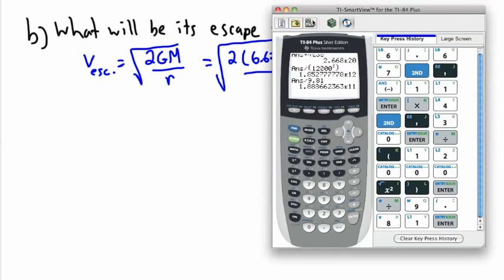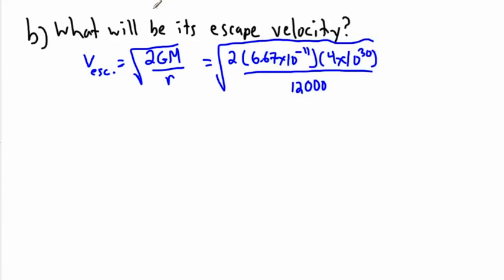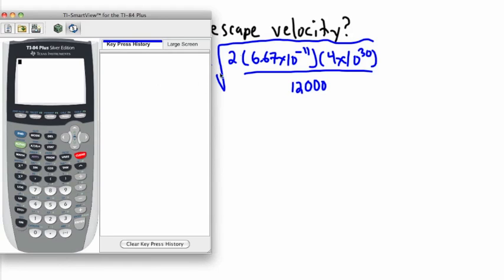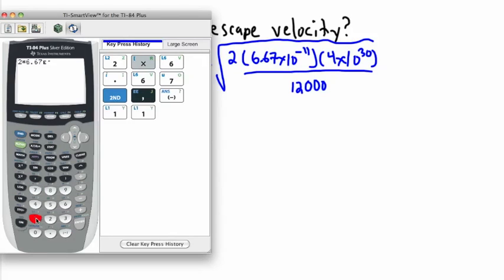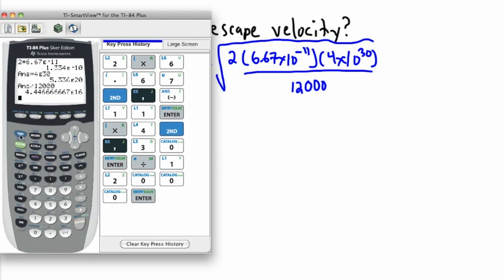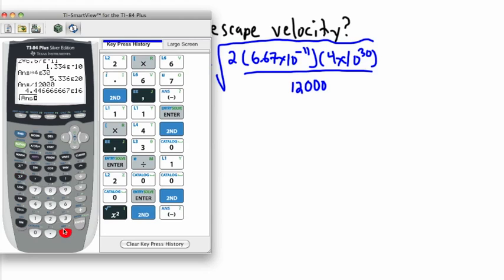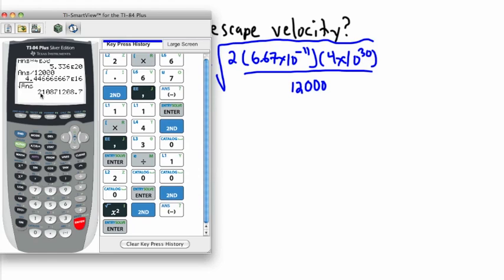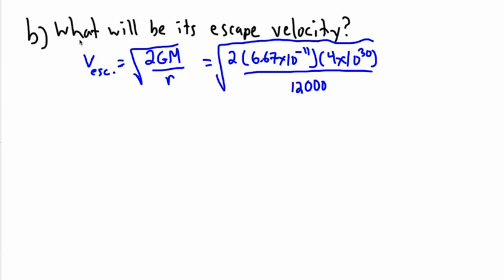So again, we need our calculator. I'm going to do 2 times 6.67×10^-11, times 4×10^30, divide it by 12,000, that was the radius of the neutron star. Then I get the square root of the answer. And then I get this number, 2.1 times 10 to the 8. So v_escape = 2.1×10^8 meters per second. That's the escape velocity. In other words, if you wanted to get in your spaceship and completely leave this object, you'd have to go this fast to get off of it.